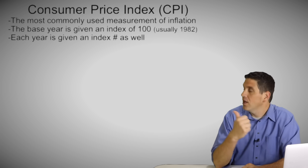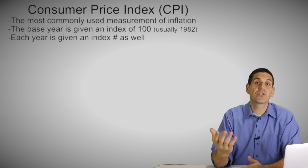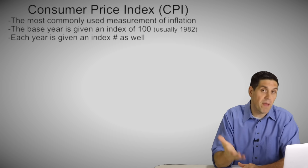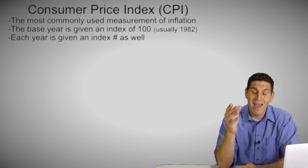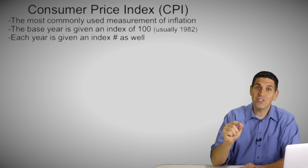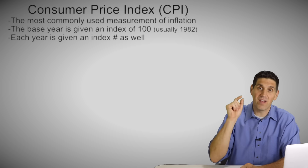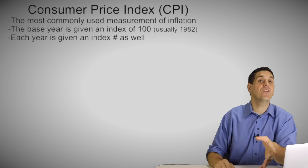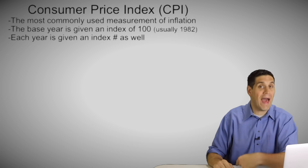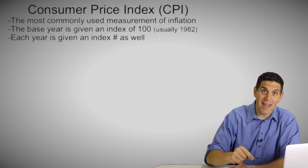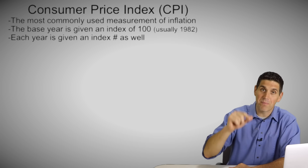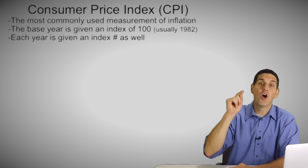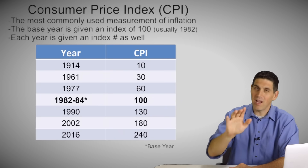The consumer price index is the most commonly used measure of inflation, and the base year is always given 100. So it is all about the base. Every year before or after that base year is given an index number, and that index number means something relative to the base year.